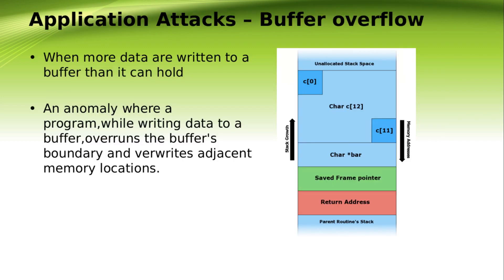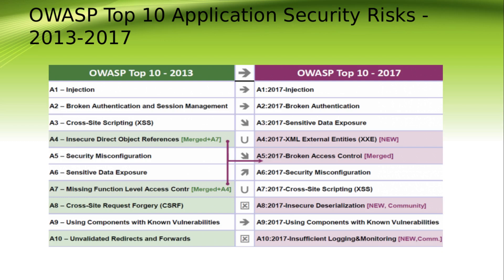Here is the OWASP Top 10 Application Security Risk list, showing a comparison between 2017 and 2030. OWASP is the number one reference for this. You can find all the information on their website directly — just Google 'OWASP Top 10 Application Security Risk' and you'll get a lot of information.